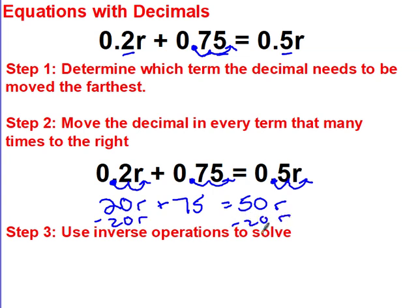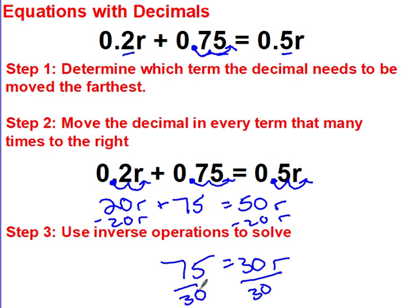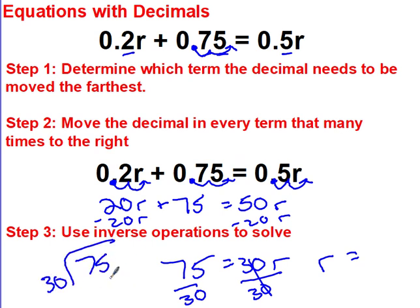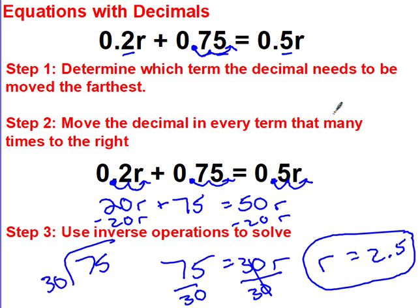Now I solve like normal: subtract 20R from both sides, giving 75 equals 30R. Divide by 30, and the answer is 2.5. Because the original problem used decimals, we actually want a decimal answer — so R equals 2.5.